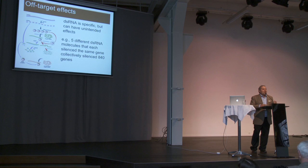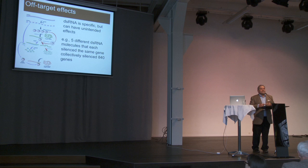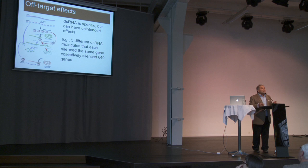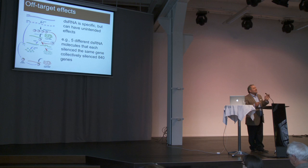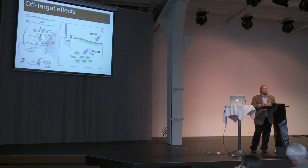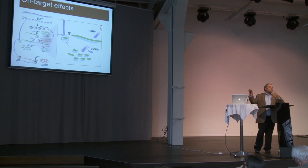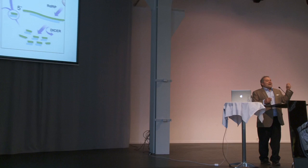These double-stranded RNAs can have off-target effects, which is one of the things that makes them important for risk assessment. One of the ways they work — through the RNA degradation pathway — can result in the production of secondary double-stranded RNAs. One study showed that five different dsRNA molecules all targeted to the same gene collectively silenced 840 genes, possibly due to this amplification pathway. Each of those dsRNAs — micro-RNAs or siRNAs — results in the production of further dsRNAs, each of which can be recruited to amplify the initial silencing reaction, but each being sequence-unique can find different genes within the genome to interact with.